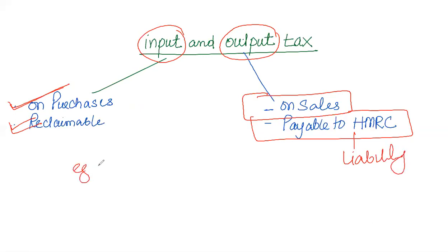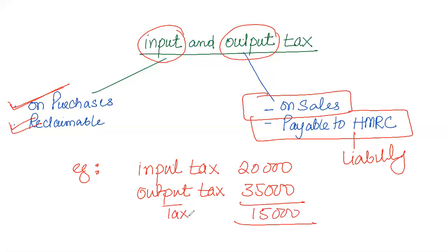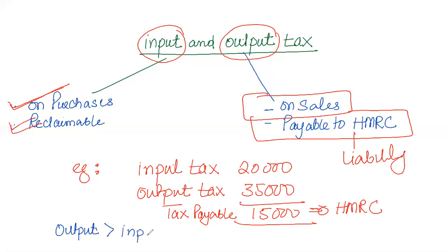For example, suppose a business is selling standard rated supplies and the input tax paid on purchases is £20,000, while the output tax charged to the customer is £35,000. We find the net balance: if output is greater than input, the difference is the net tax payable to HMRC. Conversely, if input is greater than output, the result is a receivable.